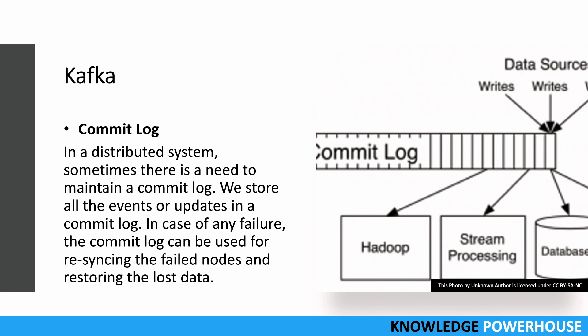Last but not least is the commit log use case. Commit log is a concept that came from databases and is now popular in distributed systems as well. We maintain a commit log where we record all events — any update happening in any service goes to the commit log. In case of failure, you can go to the commit log and start from the point where the failure occurred, allowing you to resync failed nodes and restore lost data. This is used in systems like Hadoop and stream processing databases. Kafka can help implement a commit log across an organization.